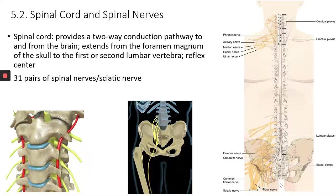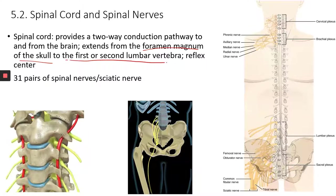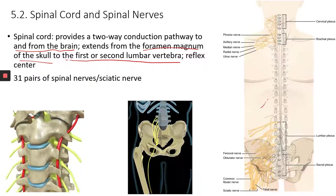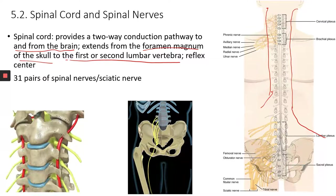The spinal cord extends from the foramen magnum of the skull — the big opening at the inferior aspect of the skull — and goes down to about the first or second lumbar vertebra. It provides a two-way conduction pathway: spinal nerves collect sensory information and transmit it up to the brain, and once the brain makes a decision, information travels down through the spinal cord to spinal nerves that innervate skeletal muscles to generate motor output.